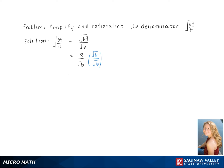Now we rationalize the denominator, multiplying the top and bottom of the fraction by square root 6. This gives us 8 square root 6 over the square root of 6 times 6. Pulling out the pair of 6's gives us 8 square root 6 over 6, and simplifying gives us 4 square root 6 over 3 as our final answer.